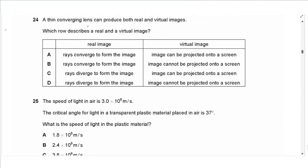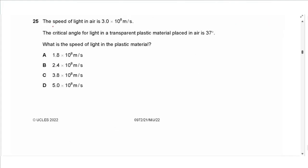Question 24: a thin converging lens can produce both real and virtual images. For a real image, actual rays converge to form the image. For a virtual image, the image cannot be projected onto a screen. The answer is B.